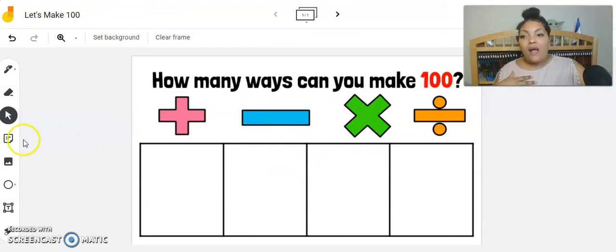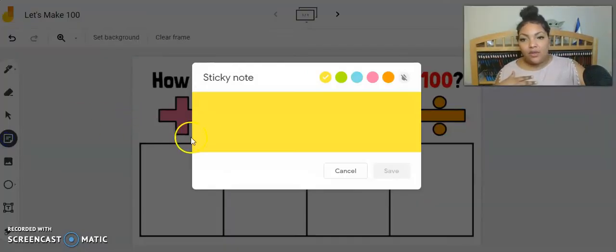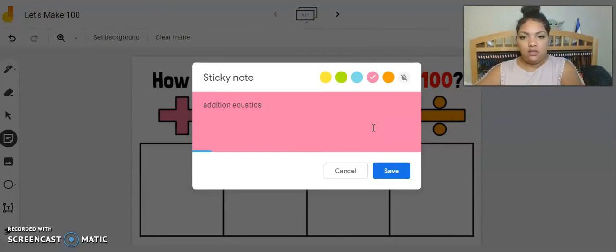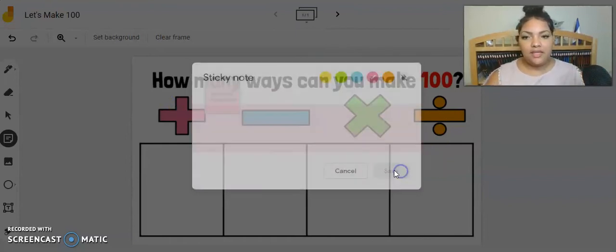And so now I will go to add my sticky notes in. And then here, since I'm making this for teachers on second grade team, I'm going to give them instructions on what to do. You, as the teacher, if you're making this for yourself, you might not need to do this. But here I'm going to add in, let's do pink. And so pink will be addition equations. Save.